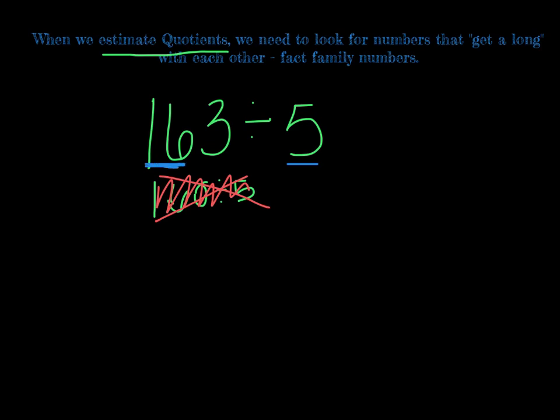16 and 5 do not get along, they're two bulls that are fighting over a piece of pizza. We cannot divide 16 by 5 evenly, we end up with remainders. So we need to think about our fact family numbers and what numbers get along. So if I go through my facts: 5 times 1 is 5, 5 times 2 is 10, 5 times 3 is 15, pretty close to 16.